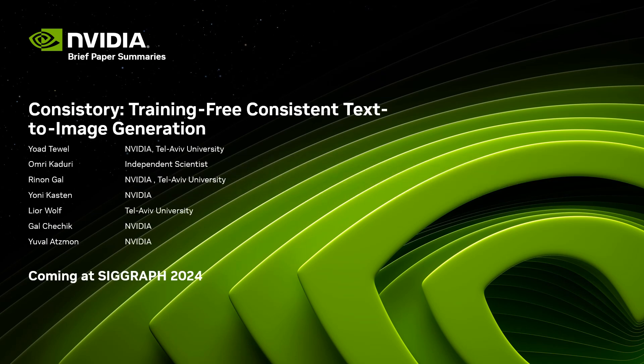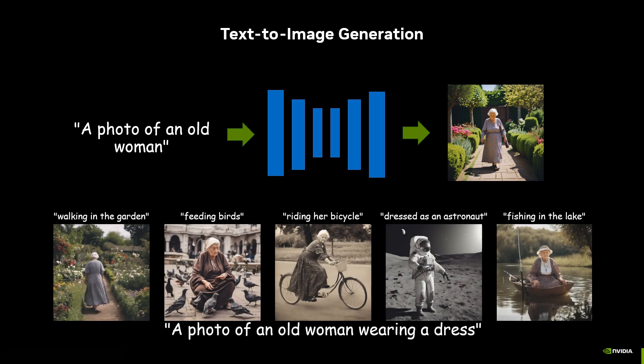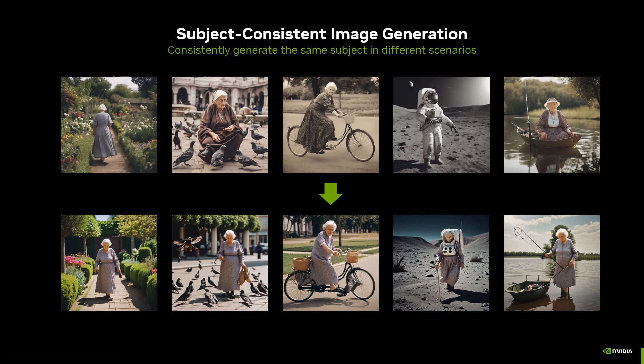I will present our new paper, Consistory, done with our collaborators at Tel Aviv University. Text-to-image models can generate an image given a prompt, but they cannot generate images with a consistent character. In this paper, we tackle the task of subject consistent generation, where we generate multiple images with the same subject.